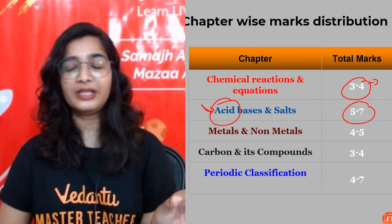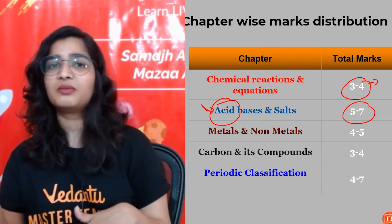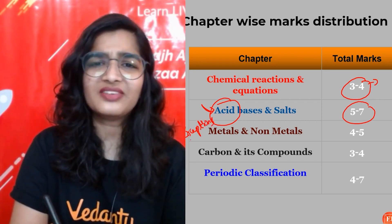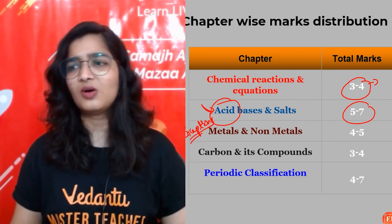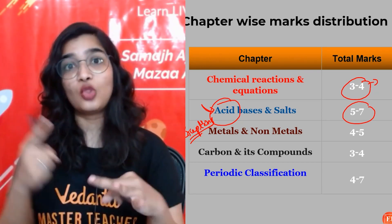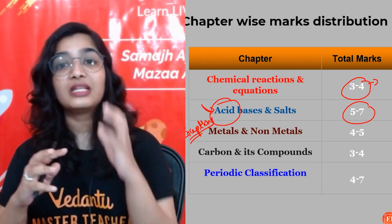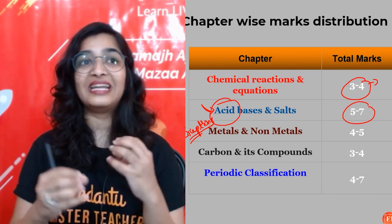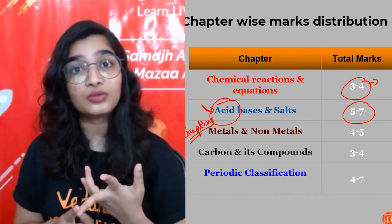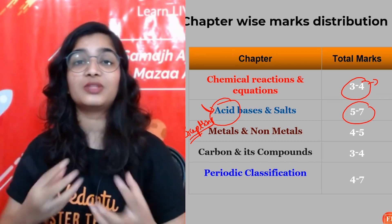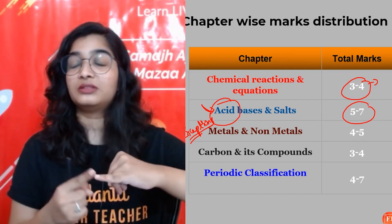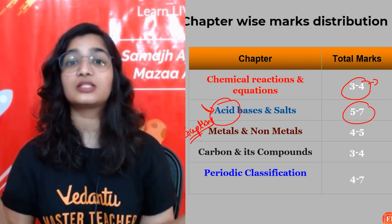Chapter 3 — Metals and Non-metals: extraction has been removed. Focus on physical properties, especially the exceptions — for example, which metals are soft, which is a liquid metal, which is non-malleable. Also focus on chemical reactions — why calcium and magnesium float (because hydrogen molecules stick to the metal surface), and why HNO₃ doesn't give hydrogen gas (it's a strong oxidizing agent). Exception: very dilute HNO₃ with magnesium and manganese will give hydrogen gas.